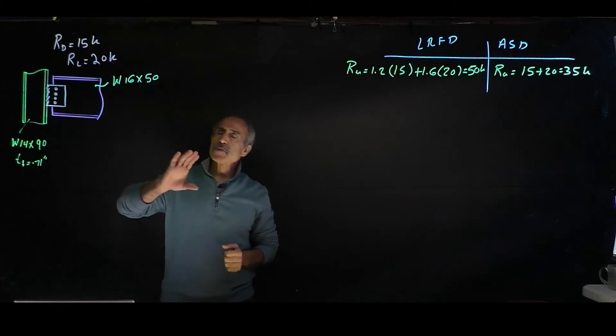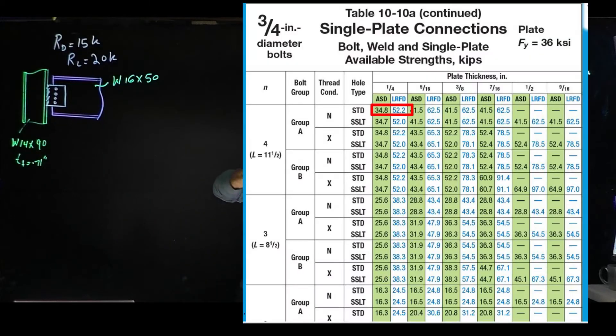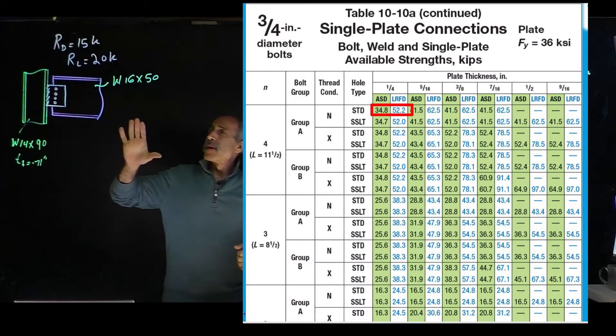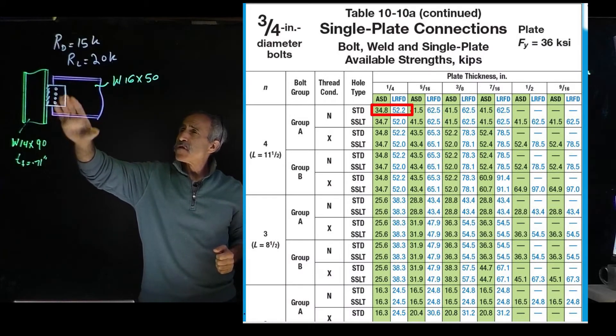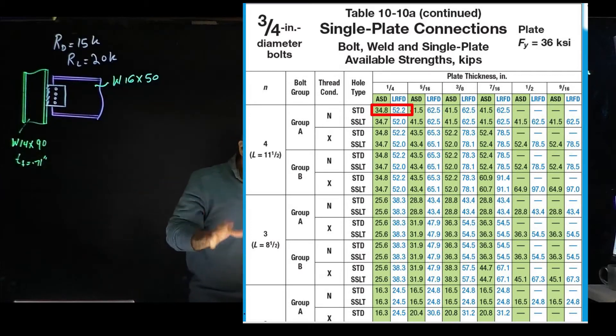Next step, we're going to table 10-10a. We're going to say that our plate has four rows of bolts. Take a look at table 10-10 and familiarize yourself with this table.